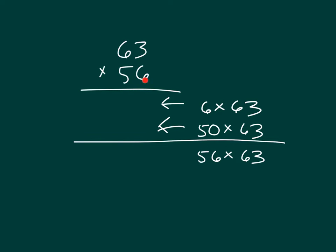Let's work that out. 6 times 3 is 18, 8, regroup a 1. 6 times 6 is 36, plus 1 is 37. So that 6 times 63 is 378.